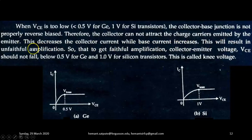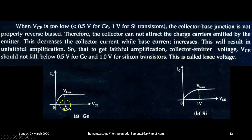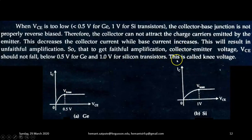This will result in unfaithful amplification. So, to get faithful amplification, the collector to emitter voltage VCE should not fall below 0.5 volt for germanium transistors and 1 volt for silicon transistors. This is called the knee voltage.